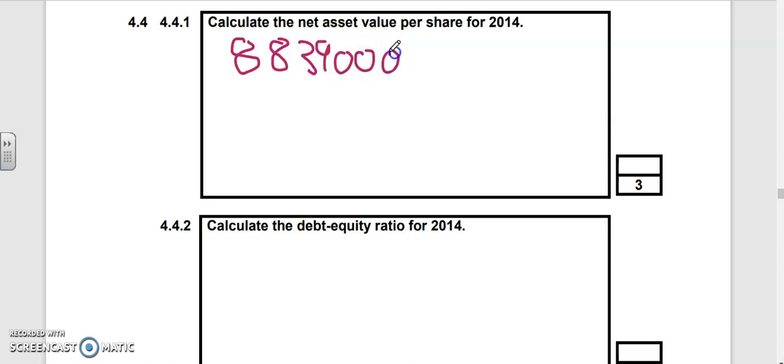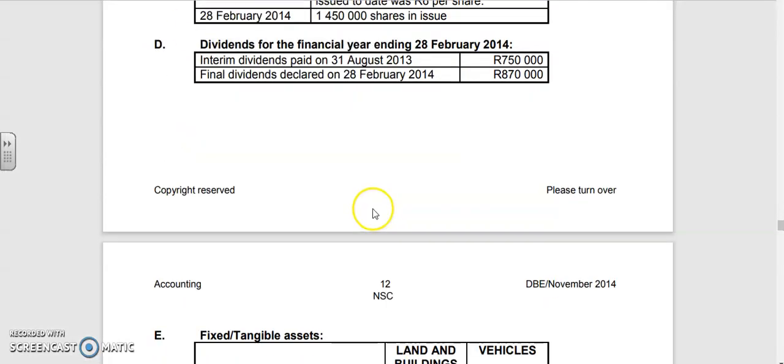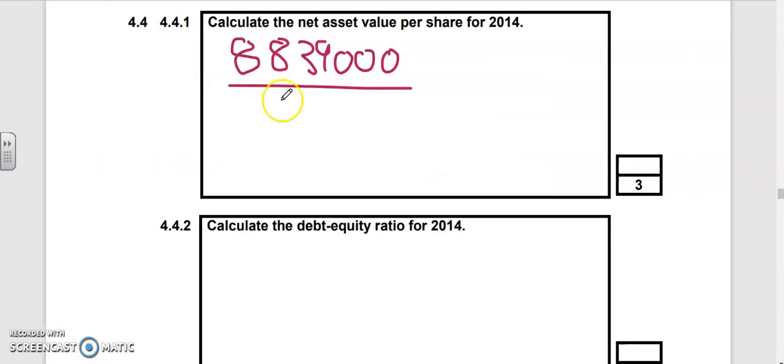Divided by the number of shares issued. You've got to be careful - the number of shares issued is the value at the end of the financial year. They started with 1,200,000, issued a further 300,000 for 1.5 million, then repurchased 50,000, leaving 1.45 million shares.